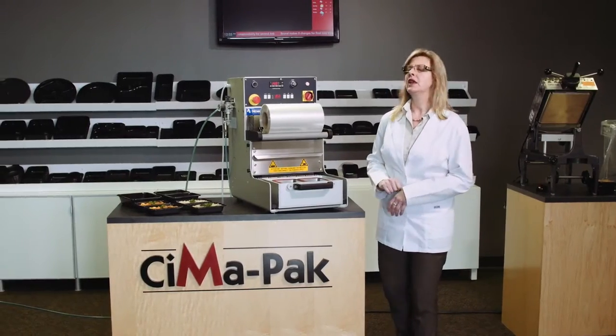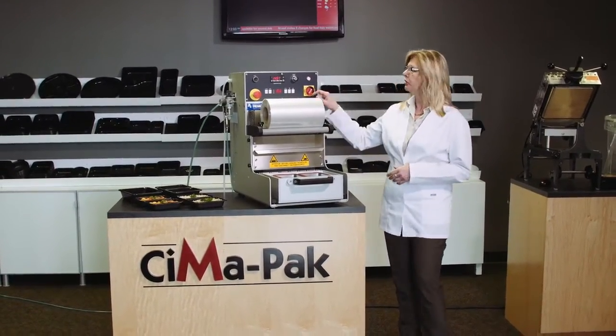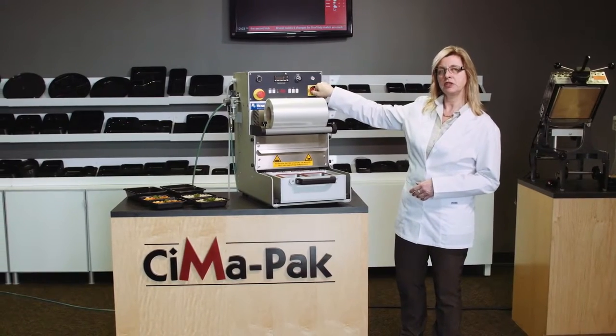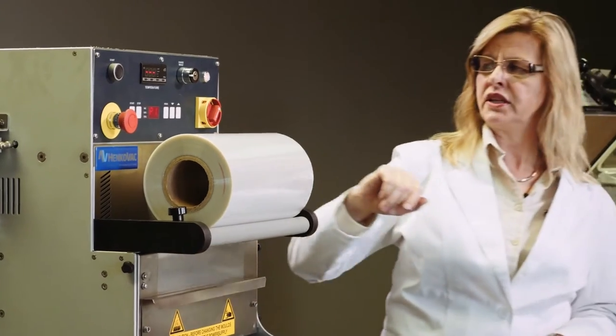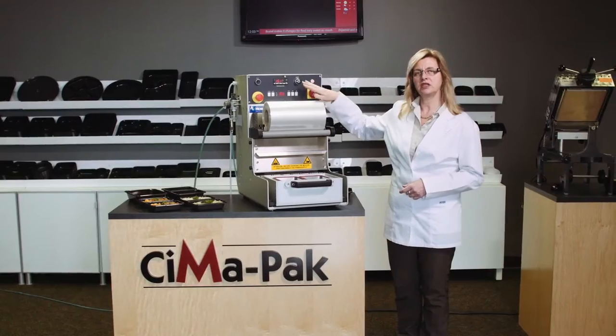To get started, you would be turning on the machine. Now, we've preset this, but here is your power switch. We have preset the temperature. We're doing CPET tray, so around 150 degrees Celsius.